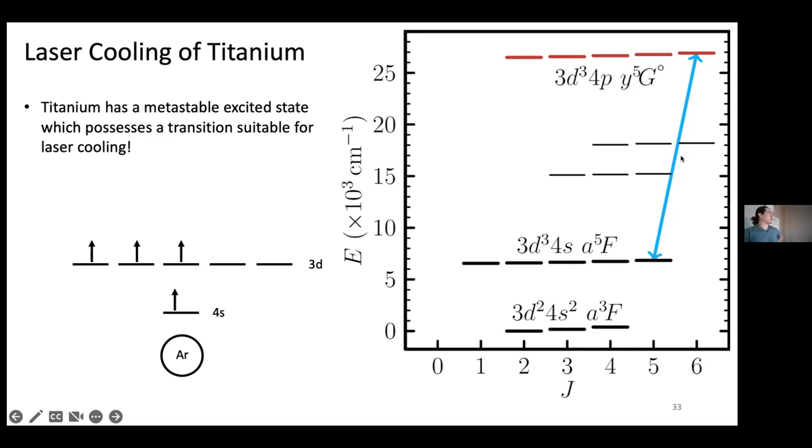One of the cool things here is actually that even though this is the electronic structure of the metastable state. But even though this is how the states are energetically ordered, the size of the shell goes by the principal quantum number. And so the 4S electron is actually larger in spatial extent than the 3D electrons. And so when a photon comes in, it basically sees an atom with a single 4S valence electron. This looks a lot like an alkali atom.